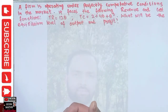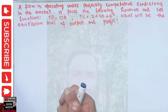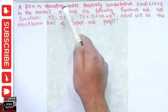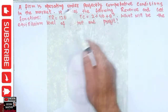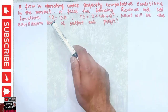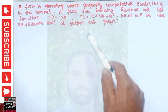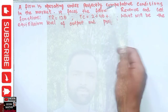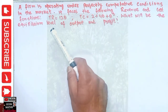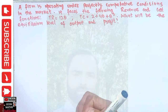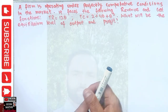In this video we will learn how to find the equilibrium level of output and profit from given total revenue and total cost functions. A firm is operating under perfectly competitive conditions and faces the following functions: total revenue equals 12Q and total cost equals 2 plus 4Q plus Q squared, where Q is the quantity. We have to find the equilibrium level of output and profit.